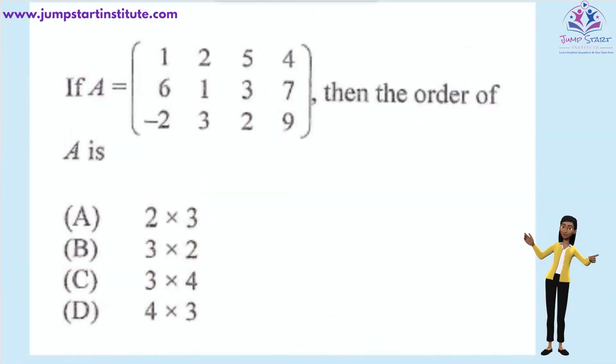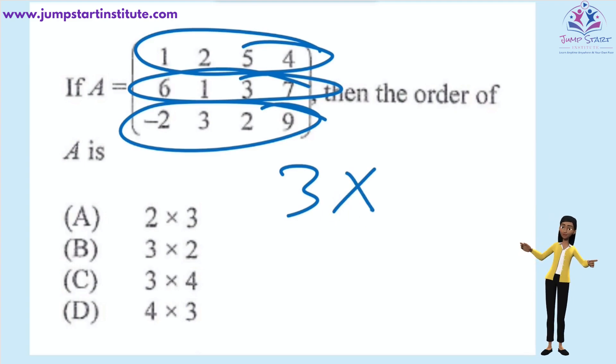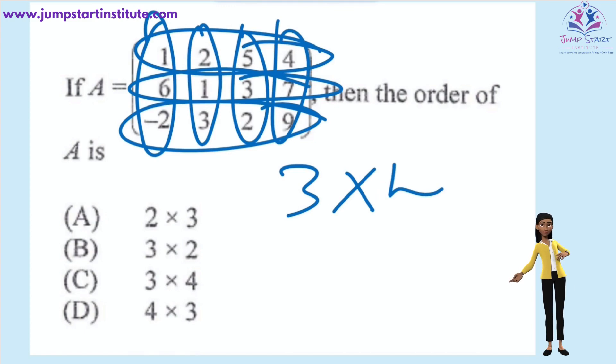If A is equal to this matrix here, then the order of A is? The order, we always write the order as the number of rows. And in this case here, we have 3 rows by the number of columns. In this case here, we have 4 columns. Always the order is row by column. Therefore, the answer is C, 3 by 4.